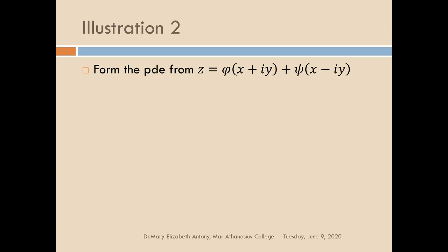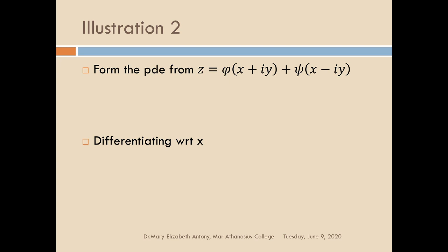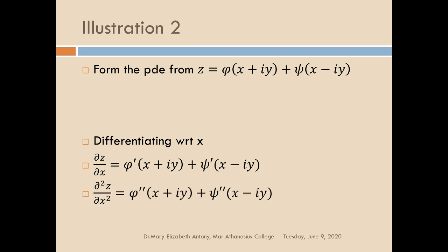Let's see another example: form the PDE from z equal to phi of x plus iy plus psi of x minus iy, where i is the imaginary complex number. Here we observe that there are two arbitrary functions phi and psi, so we cannot get a PDE of order 1 — we have to differentiate twice. Differentiating with respect to x, dou z by dou x equals phi dash of x plus iy plus psi dash of x minus iy. Differentiating again, we get phi double dash of x plus iy plus psi double dash of x minus iy.